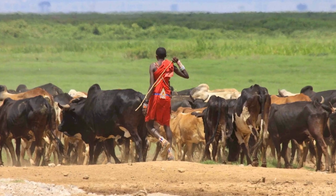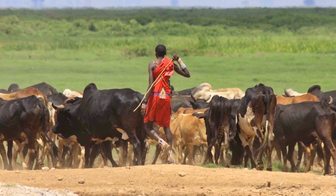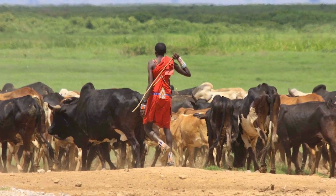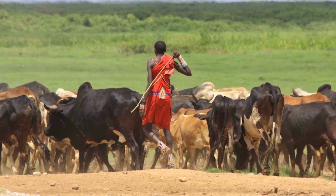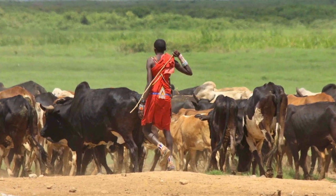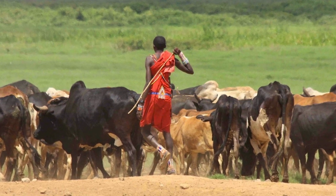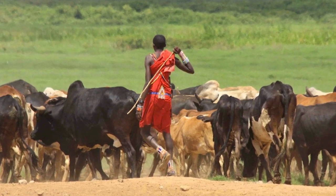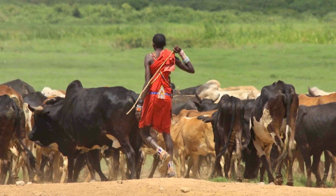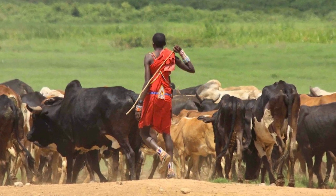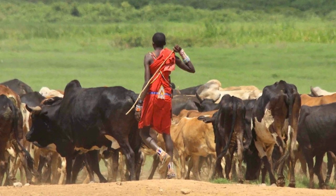The story of Tanzanite's discovery is that there were some Maasai herders who found the blue crystals in the Merelani hills near Arusha in Tanzania while they were tending livestock. The Masai are an ethnic group inhabiting northern, central, and southern Kenya and northern Tanzania.